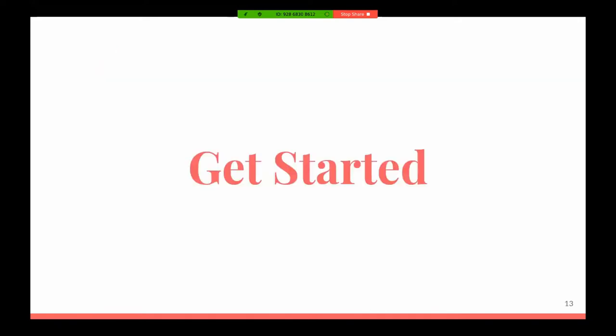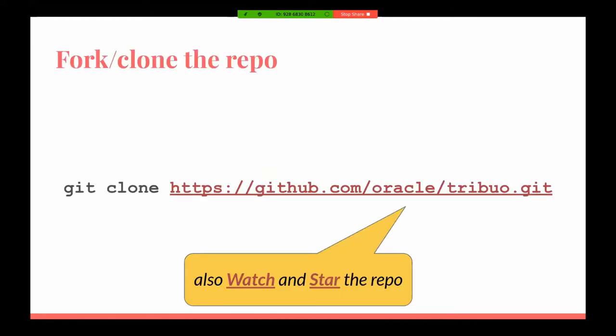Let's get started with Tribio, the library itself. It's an open source library. Where do you find its source code? How do you clone or fork it? This is the repository address. But I would suggest: don't just clone and fork — go ahead and click on Watch and Star as well, because that will help you show your appreciation for the library and keep you up to date with all the current activities, issues raised, pull requests, and comments.